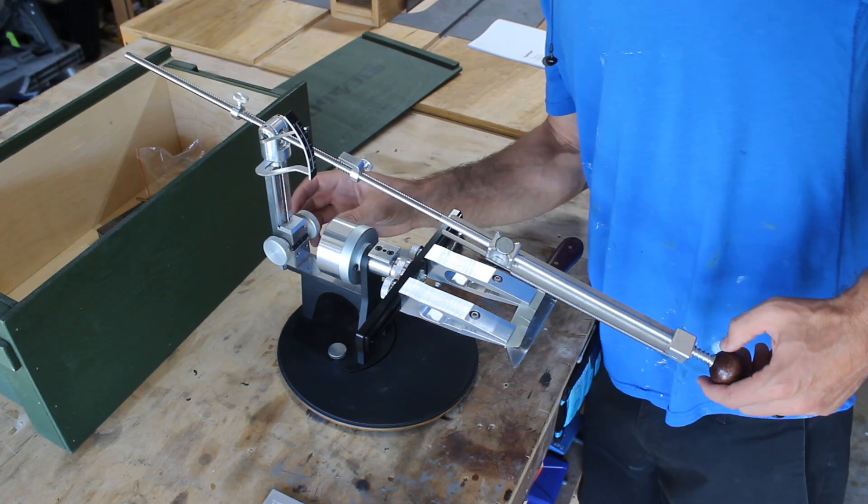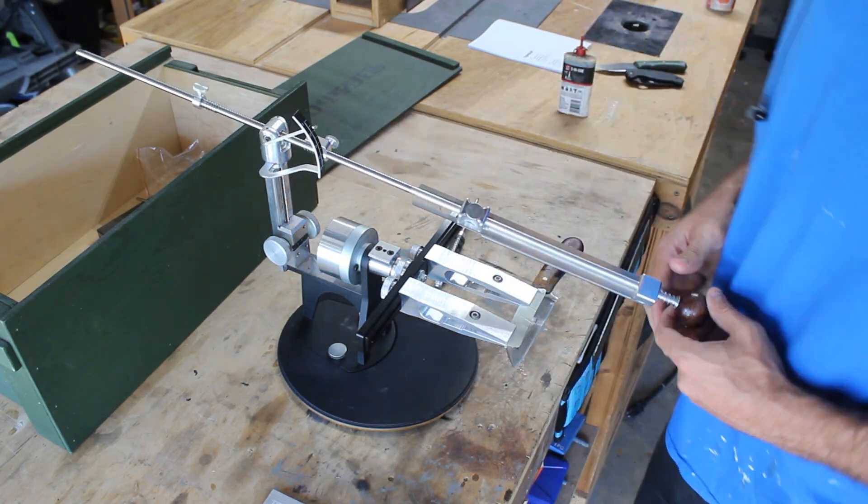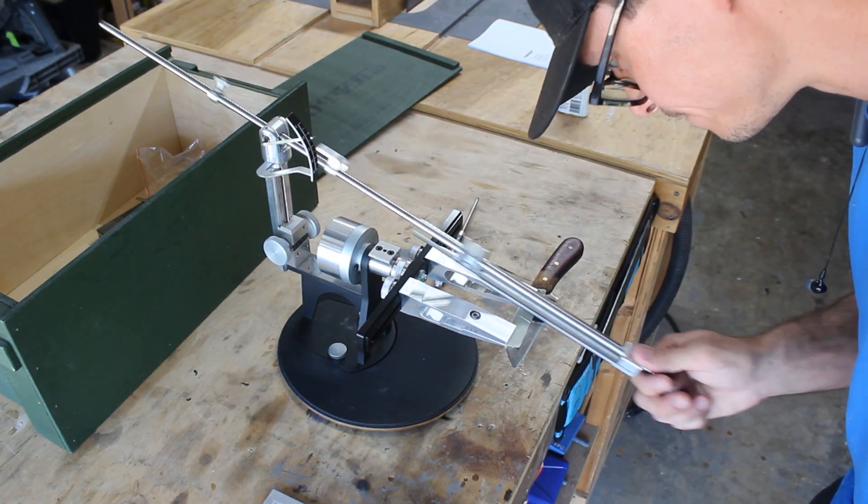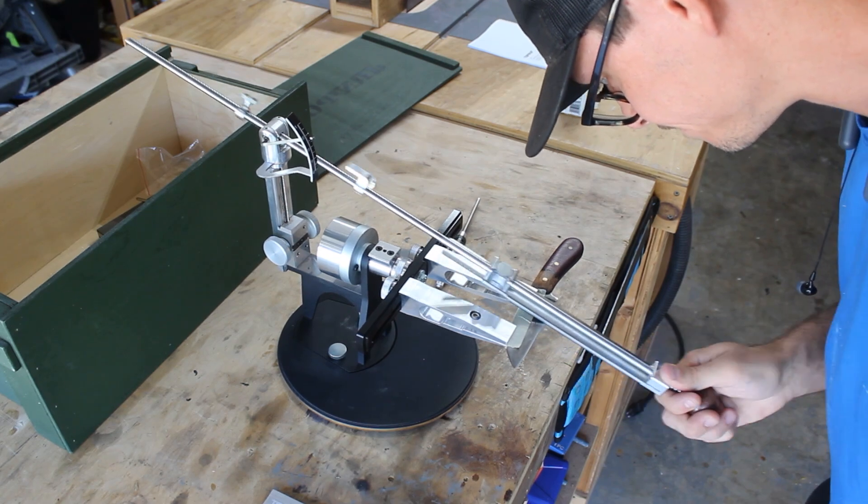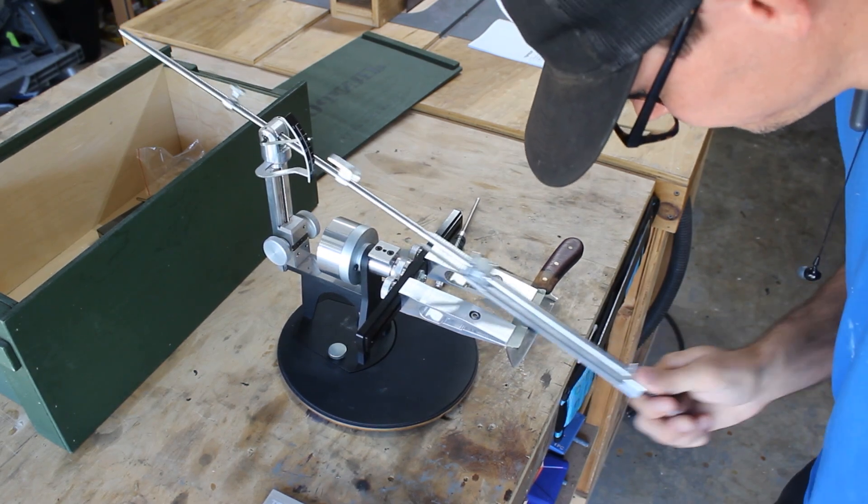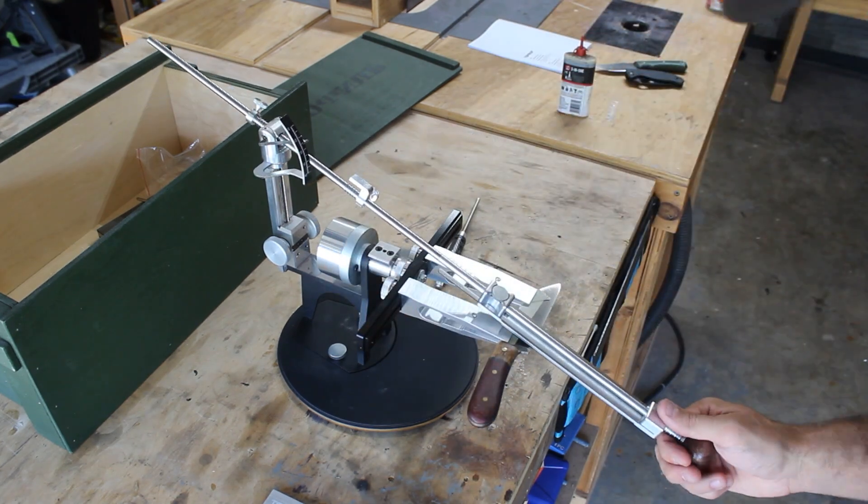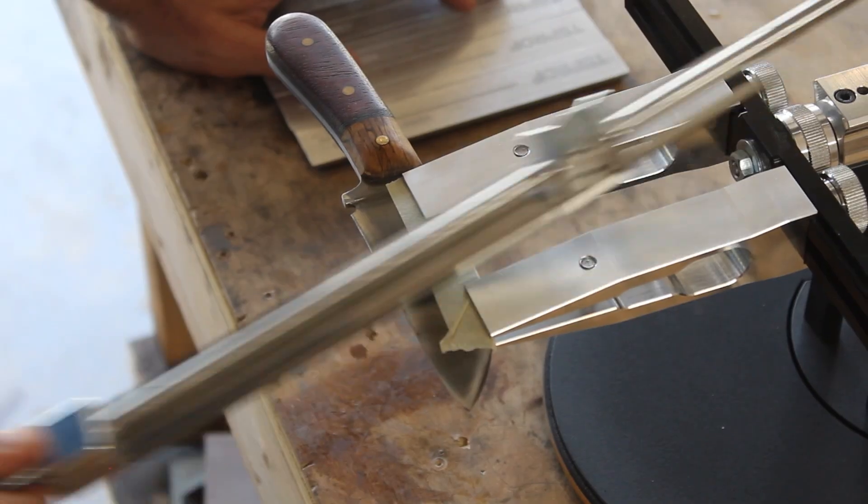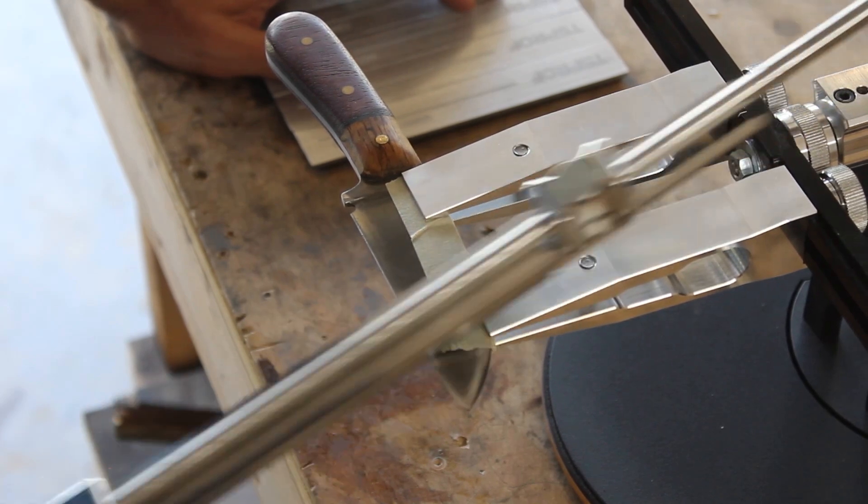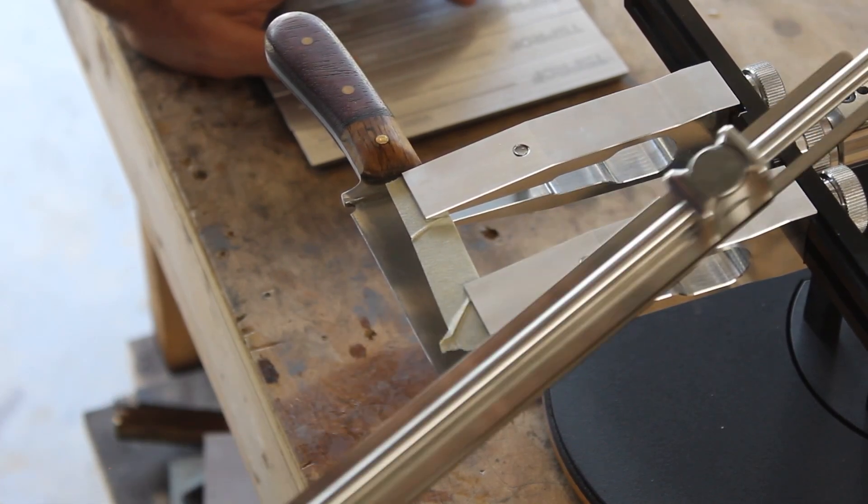So now I'll go ahead and adjust the angle and sharpen with the 150 grit stone until I get an even burr all the way across the edge. Once I get an even burr, I'll go ahead and flip the knife to the other side and repeat that same process until I can feel an even burr all the way down across the edge.